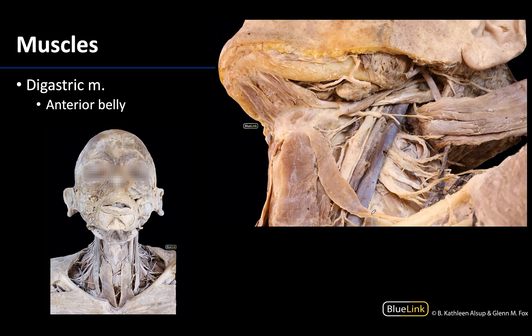Let's finish this discussion with one of the suprahyoid muscles: the digastric muscle. We have this one here because it is often visible in an anterior neck dissection. You can see the anterior bellies of the digastric right here above the hyoid bone. So here are some of those infrahyoid strap muscles — specifically the deep dissection — and then right above the hyoid, you're getting into the suprahyoid muscles, and that anterior belly of the digastric is really visible.